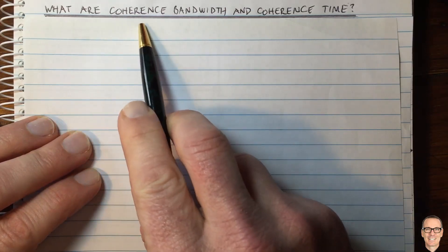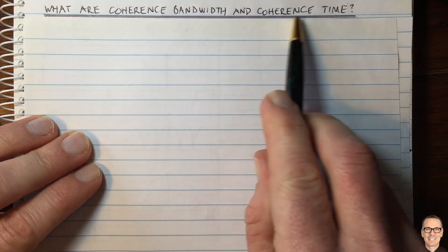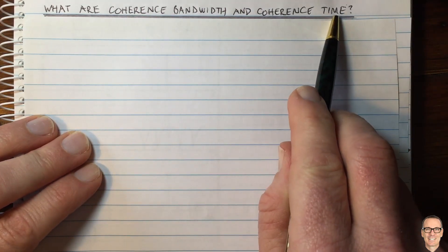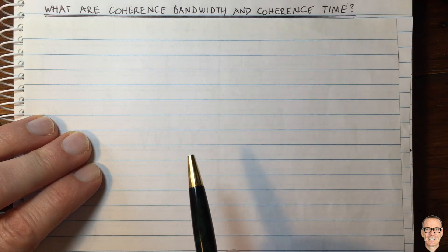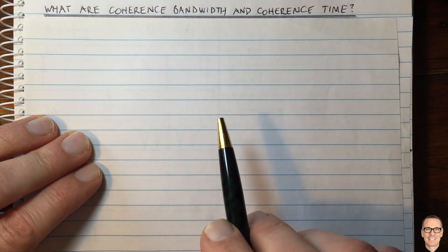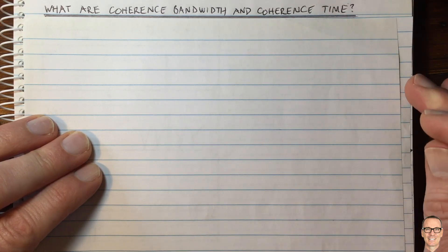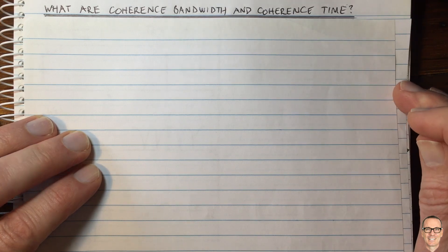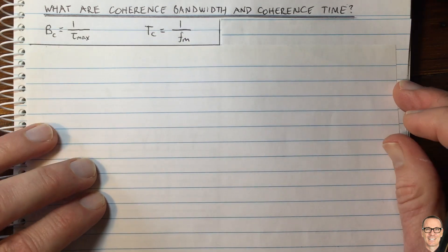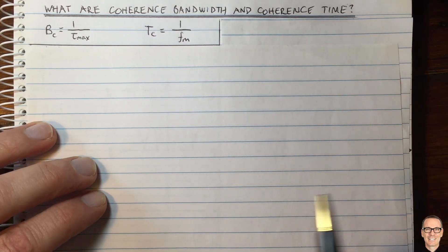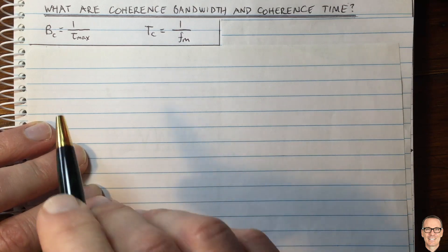What are coherence bandwidth and coherence time in digital communications? And why don't I like these two things? Let's start with the definitions, then I'll explain how the definitions come about, and then I'll explain why I don't like these two concepts.